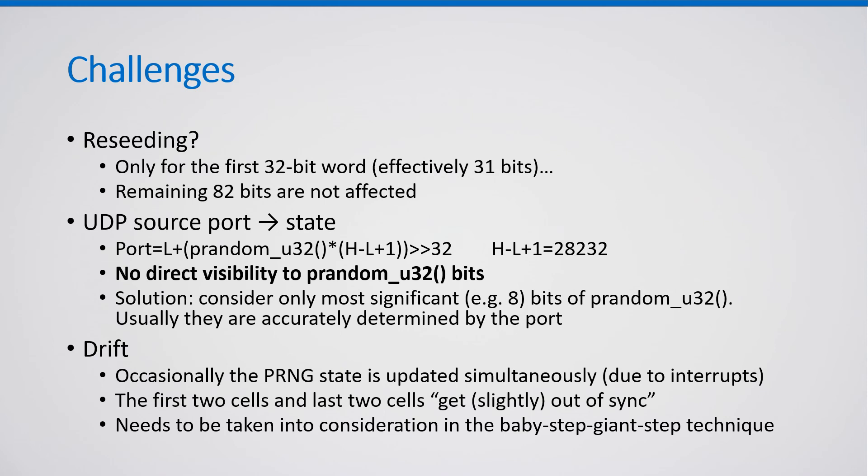Another challenge is obtaining pRandomU32 bits from UDP source port observations. The pRandomU32 bits are not simply copied into the UDP source port — a specific formula is used. However, if we look at only the most significant 8 bits of pRandomU32, these bits are determined fairly accurately by the port value. Therefore, the attacker can still collect enough port values to extract pRandomU32 bits and reconstruct the state.